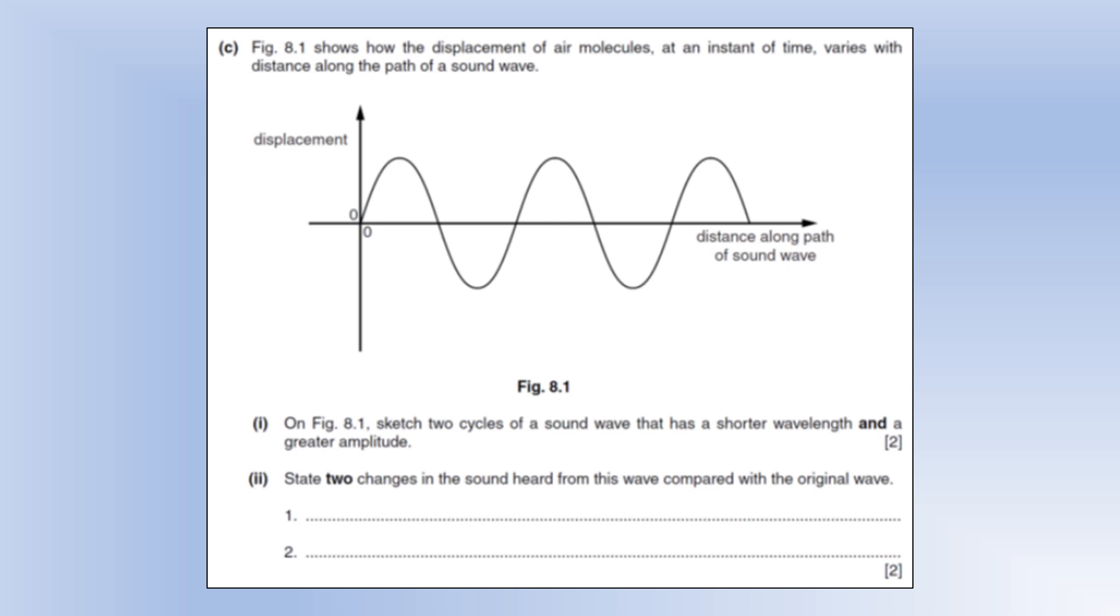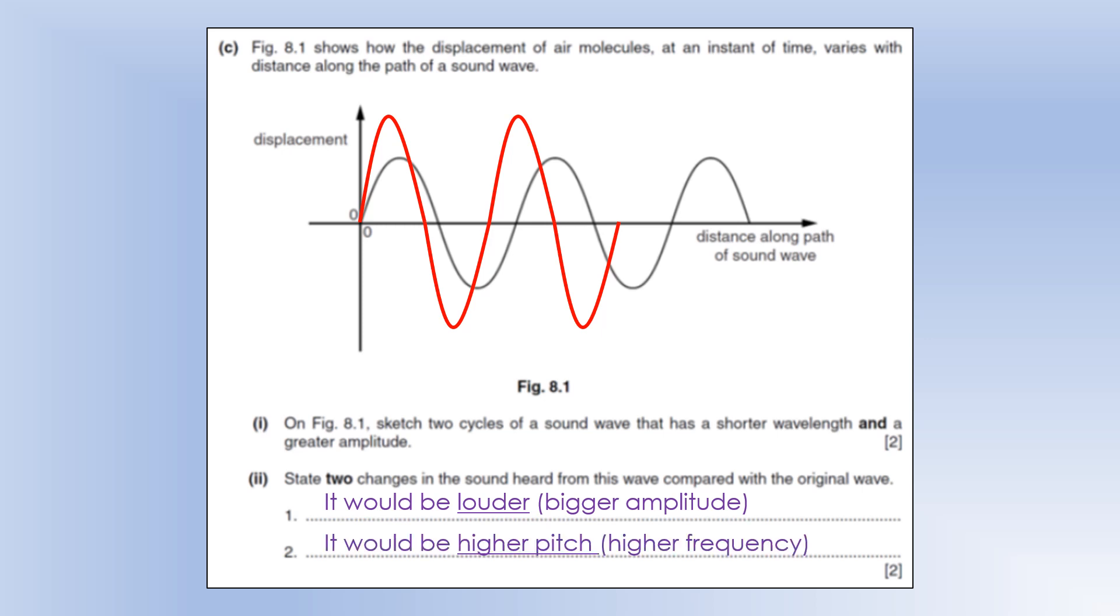So the diagram shows how the displacement of air molecules at any instant of time varies with distance along the path of sound wave. Okay, so sketch two cycles of a sound wave that has a shorter wavelength and a greater amplitude. Okay, so greater amplitude we can see the peak is further from the central line, and shorter wavelength, so we've completed two full cycles in a shorter distance than the original wave did. State two changes in the sound heard compared to the original: well bigger amplitude means it's louder, and a shorter wavelength means it's higher frequency, so it's higher pitch.